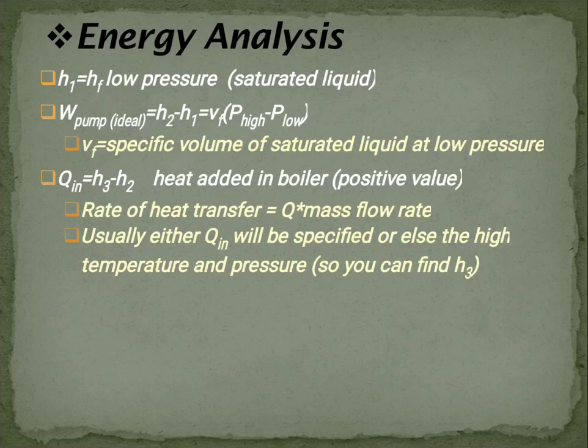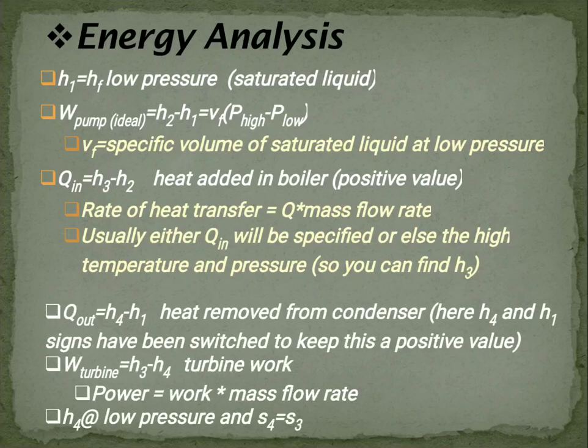And next is Qin, that is heat addition. Heat addition takes place in a boiler. So here the heat addition will be H3 minus H2. Next is rate of heat transfer. We can find the rate of heat transfer, that is heat addition times mass flow rate. Rate of heat transfer depends on the mass flow rate, that how much mass we are flowing through this boiler. Next is usually either Q addition will be specified or else a high temperature and pressure, so you can find H3.